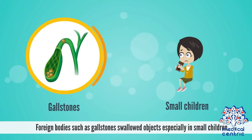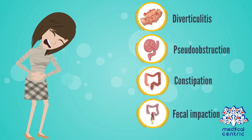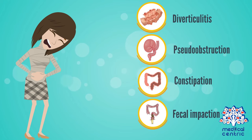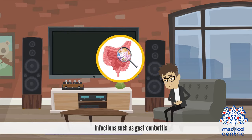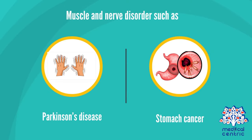Swallowed objects are especially common in small children. Other causes include intussusception, most common in children, diverticulitis, pseudo-obstruction, constipation, fecal impaction, infections such as gastroenteritis, and muscle and nerve disorders such as Parkinson's disease.